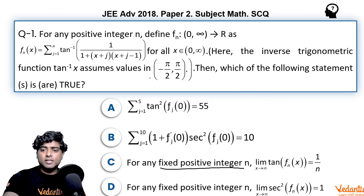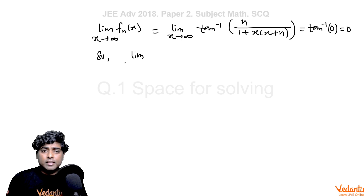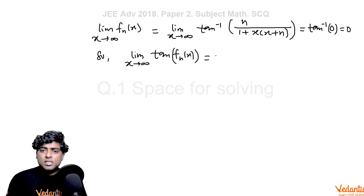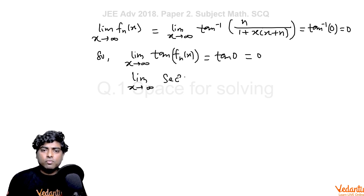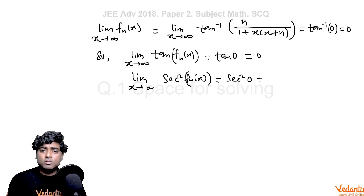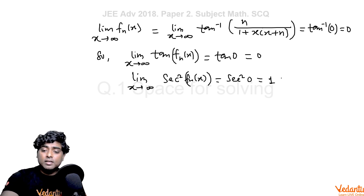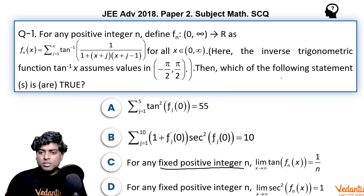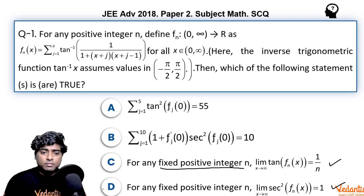Option C asks for tan of (limit as x→∞ of Fn(x)) = tan(0) = 0. Option D asks for sec² of (limit as x→∞ of Fn(x)) = sec²(0) = 1. The left-hand side of option C must be 0 — option C gives a non-zero value so it is incorrect. Option D gives 1, which matches. So option D is the only correct option, since A and B were already rejected.